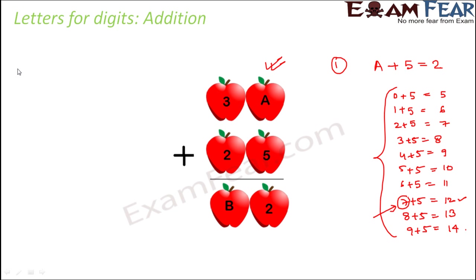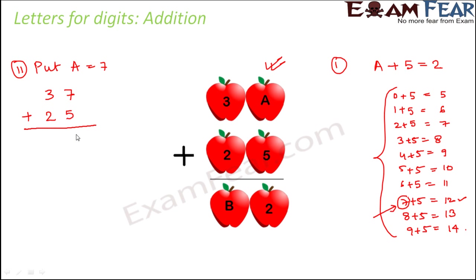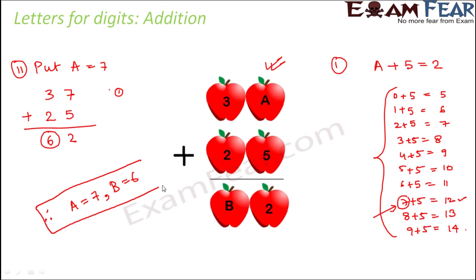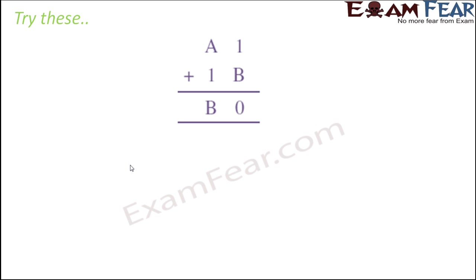So we have guessed A could be 7 — that was our first step. In the second step, we put A equal to 7 in the problem. So it becomes 3, 7 plus 2, 5 with B in the tens place, giving result 2 in the units place. Now 7 plus 5 is 12, so we have 1 as carry forward. Then 3 plus 2 is 5 plus 1 carry forward equals 6. So B has to be 6. Therefore, in this problem, A is equal to 7 and B is equal to 6.